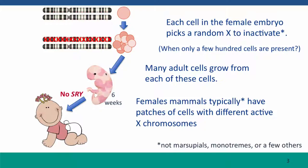And these chromosomes remain inactivated throughout life. So each cell, once the X chromosome is inactivated, it remains inactivated in that cell and all of that cell's descendants. The consequence is that females typically have patches of cells that express their paternal X chromosome and other patches that express the maternal X chromosome. The only exception are the non-placental mammals — the marsupials and the monotremes — where often there are mechanisms for preferentially turning off one or the other of the X chromosomes.